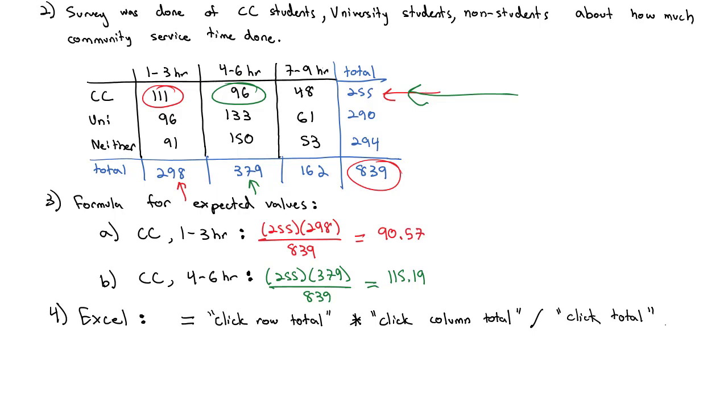And then we're going to make a minor edit to the formula. We're going to put a dollar sign before the numbers and letters for the overall total. And we should do that twice. Two for the numbers and two for the letters. And then we can drag the formula.